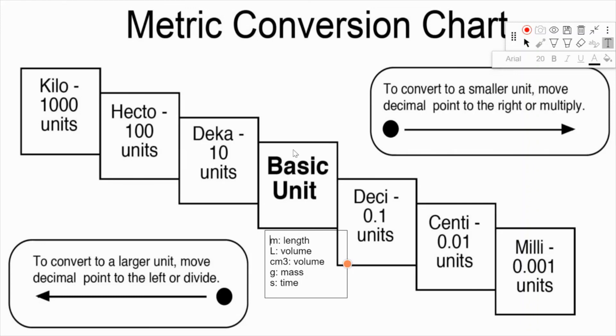When you go from one unit to another when converting, if you're going to a smaller unit - like from kilogram to decagram - you move the decimal point to the right however many times you move. Whenever you go to a larger unit, you move it to the left.